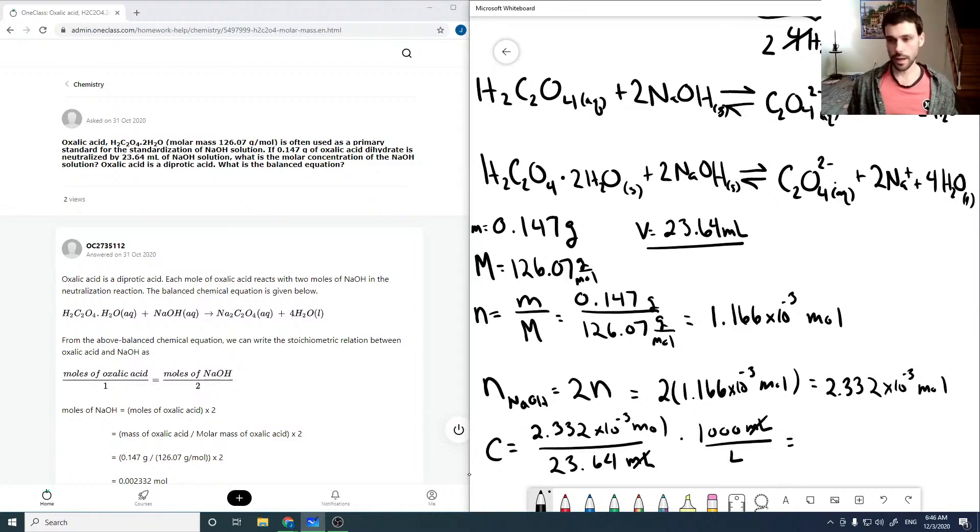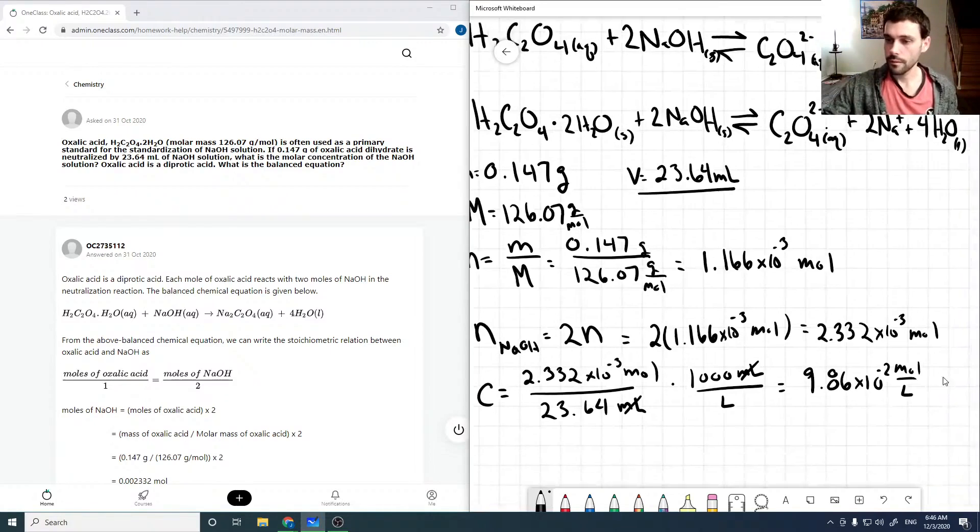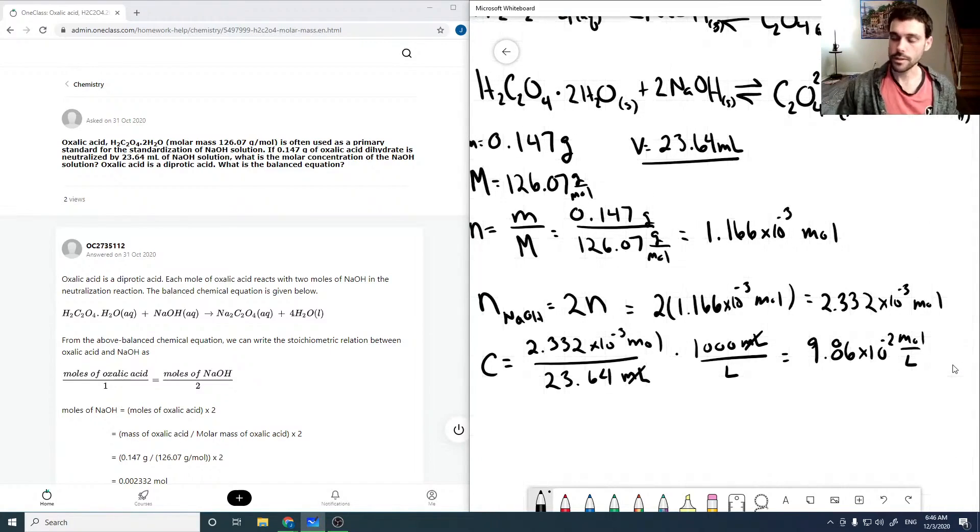And so we get 9.86 times 10 to the minus 2 moles per liter. Or in units that are more typically seen, 9.86 times 10 to the minus 2 molar.